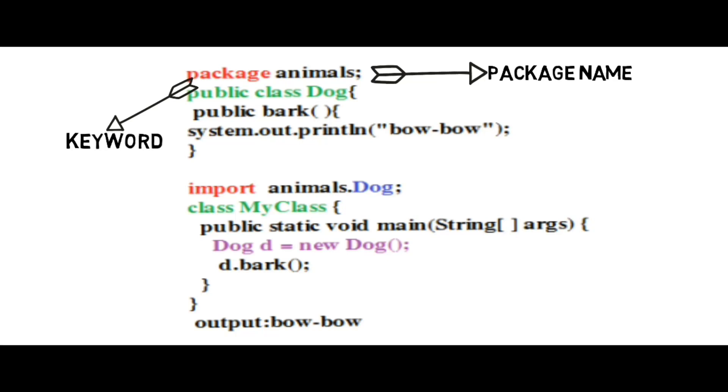Import keyword is used to import all the properties of Dog class. Animal.Dog means animal is the package name, Dog is the name of our class.